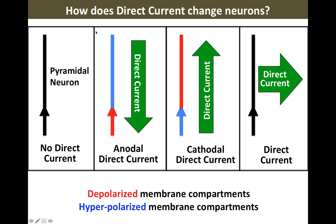The reason is that current flowing in a given direction will cross into the cell producing hyperpolarization, then flow down the cell and exit it producing depolarization. Because current always has to enter and exit, you get a seesaw polarization profile. The direction of the current flow determines which end is depolarized and which end is hyperpolarized — in the anodal direction the soma is depolarized, in the cathodal direction the soma is hyperpolarized.